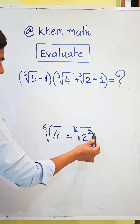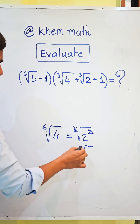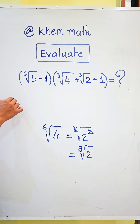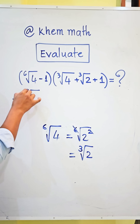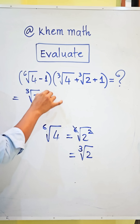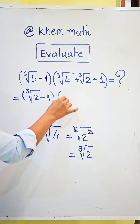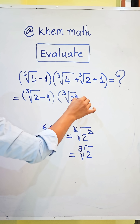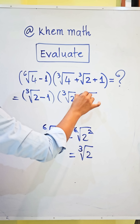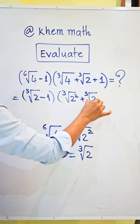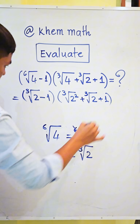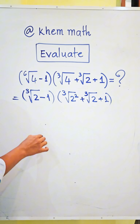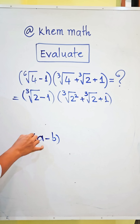Simplifying — the sixth root of 2 squared reduces to the cube root of 2. So the expression becomes: cube root of 2, minus 1, times the quantity: cube root of 2 squared, plus cube root of 2, plus 1. Here we use the formula: a minus b, times a squared plus a·b plus b squared.